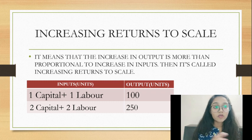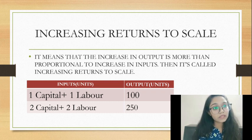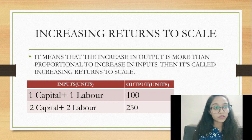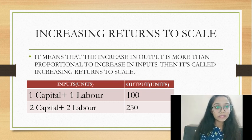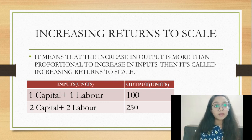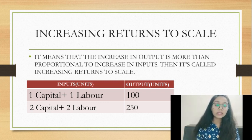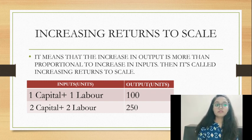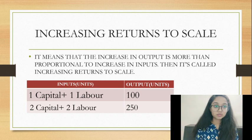For example, with 1 capital plus 1 labor we have 100 units of output, and with 2 capital and 2 labor we have 250 units of output — an increase of 150 units. Since the output increased by more than the proportionate increase in input, that is what is called increasing returns to scale.